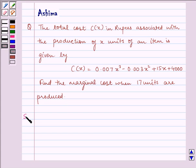Now let's proceed to the solution. Given to us, C(x) equals 0.007x³ minus 0.003x² plus 15x plus 4000.